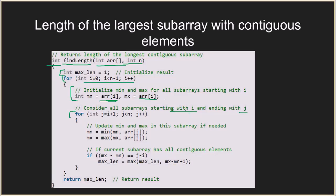The inner loop starts with j equal to i plus 1 and runs while j is less than n, incrementing j each iteration. We update the minimum and maximum values in the subarray as needed, comparing the element at index j with the current minimum and maximum and updating them accordingly.